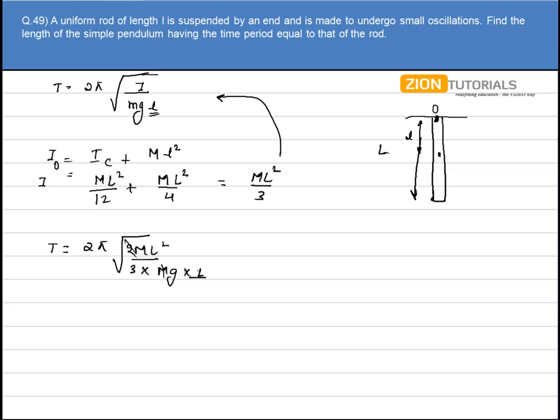So M is cancelled, one L is also cancelled. Time period comes out to be 2π under root of 2L/3G.